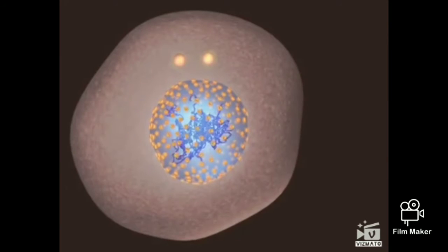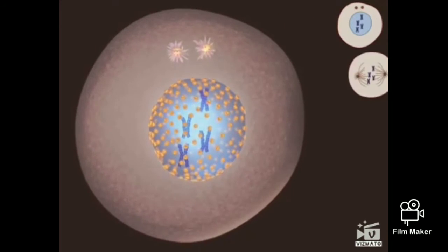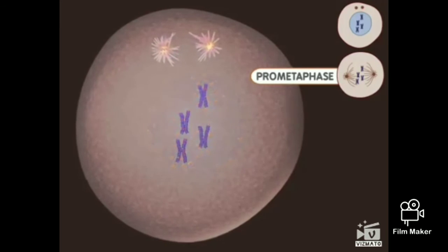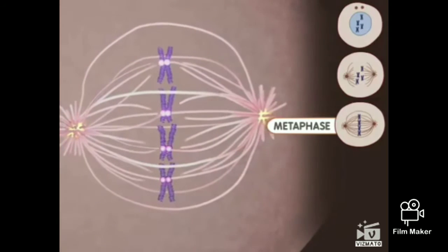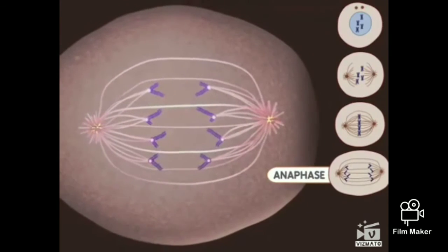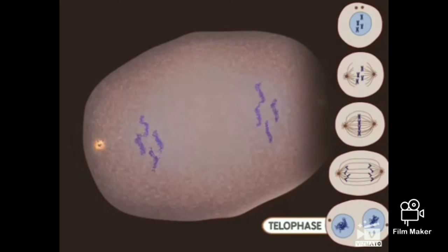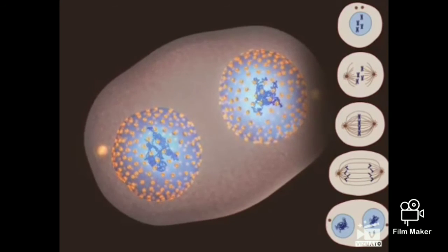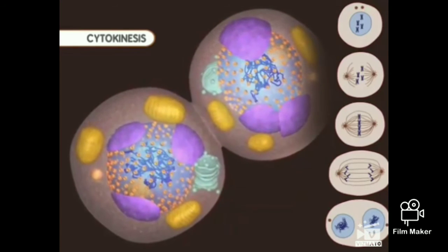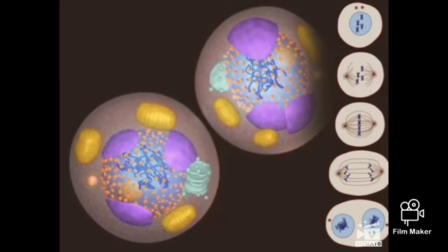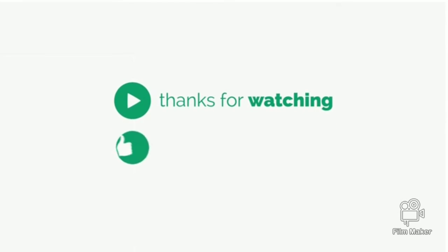Let's watch the process one more time. Mitosis begins with prophase — notice the DNA condensing into chromosomes during this stage. Microtubules appear during prometaphase, and the nuclear membrane breaks down. Metaphase occurs when the chromosomes are aligned at the center of the cell. During anaphase, the chromosomes are moving apart. The telophase stage is marked by the appearance of new nuclear membranes. This is the end of mitosis. Finally, the splitting of the cell comes during cytokinesis. The two new cells are now ready to grow or perform their specialized function.